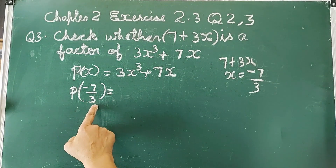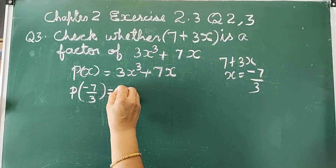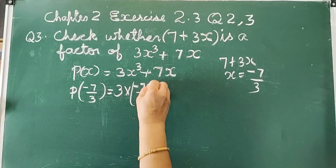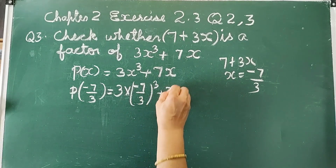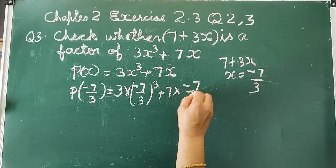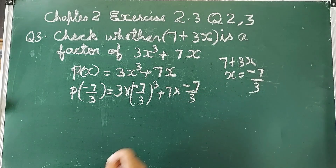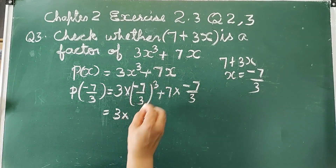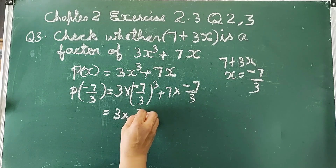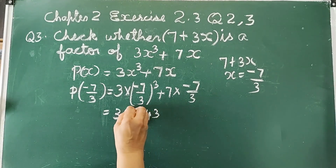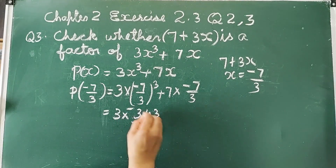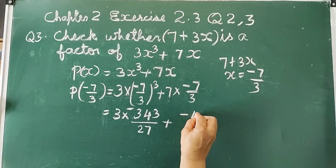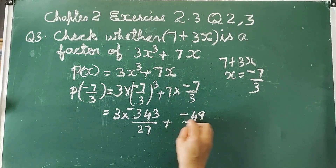p(-7/3) is equal to 3 into (minus 7 by 3) whole cube plus 7 into (minus 7 by 3). Now, 3 into minus 343 by 27 plus minus 49 by 3.